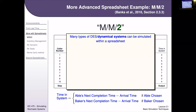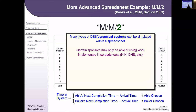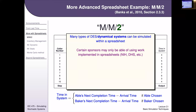Many types of dynamical systems can be simulated in spreadsheets, and some sponsors require it. People working with NIH or DHS sometimes have to use Excel because it's on the approved software list for that government unit, even if they'd prefer a more sophisticated simulation platform.